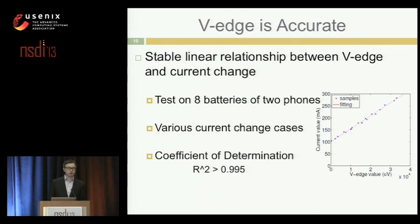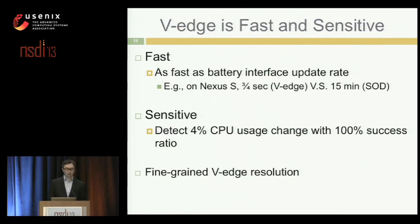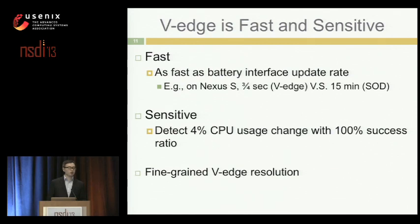V-Edge is accurate because of the stable linear relationship between V-Edge change and current change, allowing a one-to-one mapping from V-Edge to current change. It's also very fast — on Nexus S, we can get the power consumption for one operation within one second using V-Edge, versus 15 minutes with the SOD method — more than 100 times faster. V-Edge is also very sensitive: it can detect 4% CPU usage with 100% success ratio, and provides fine-grained resolution with more than 100 discrete values compared to the SOD method.